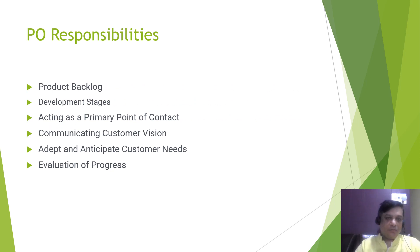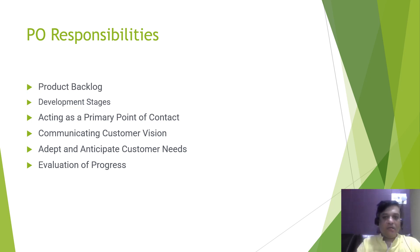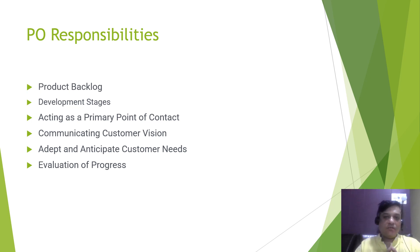The first PO responsibility is the product backlog, which is one of the primary responsibilities of the product owner. The PO must own and define the product backlog according to customer reviews and requirements. Proper prioritization of the backlog based on urgency and criticality of the requirements must happen.